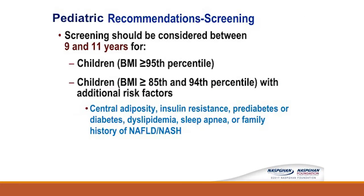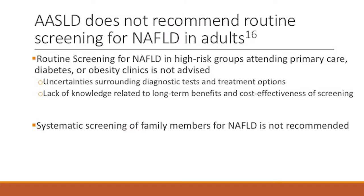How do we diagnose these patients? Two societies provide guidance: NASPGHAN and the AASLD — the American Association for the Study of Liver Diseases. NASPGHAN recommends screening between 9 and 11 years of age if a child has a BMI greater than the 95th percentile, or between the 85th and 94th percentile with additional risk factors. Interestingly, the AASLD does not have specific adult screening guidelines and suggests it may not be cost effective — so the pediatric group is actively screening while the adult group does not have the same requirement.